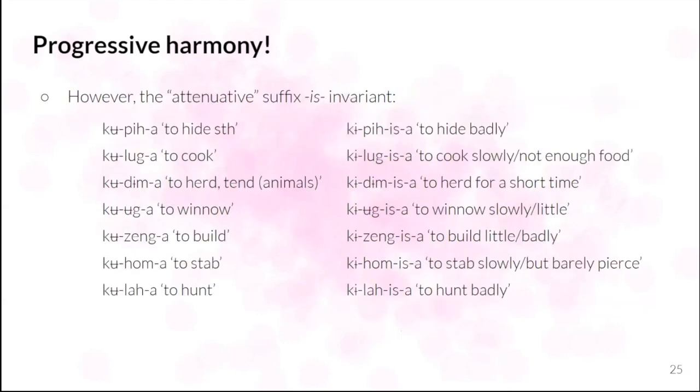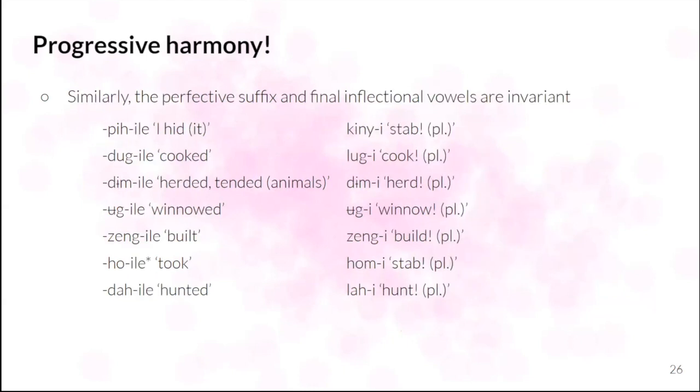But then not all verbal extensions alternate. So we have the example here, so this is kind of a counterpart to what I call the intensive, and I've called this the attenuative, for want of a better label. And this is invariably, the vowel in this is invariably E, so a degree 1 vowel, this does not alternate. Similarly, the first vowel in the perfective suffix E does not alternate. At least these are my impressionistic judgments. And similarly, for the plural imperative, the final vowel E does not seem to alternate.